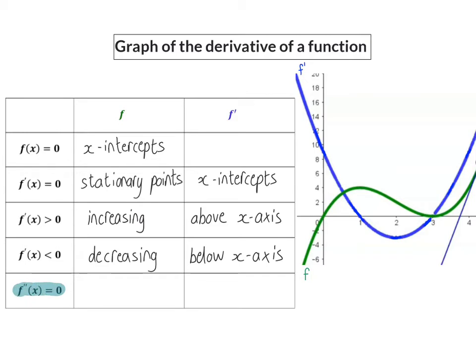Lastly, we can determine the second derivative and put it equal to zero. For the original function this will determine the inflection point, and this also shows the first derivative function's turning point. On our sketch the inflection point of the green graph is at x = 2, and that is also the turning point of our derivative graph. So we can now give you either of the two graphs and ask you questions about any of the two functions, and you should be able to switch between the two graphs.